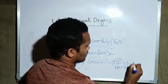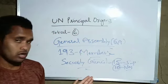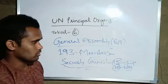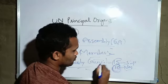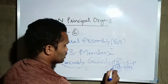5 permanent, 10 non-permanent. So 5 permanent and 10 non-permanent members.